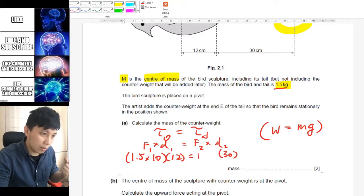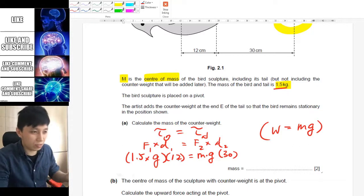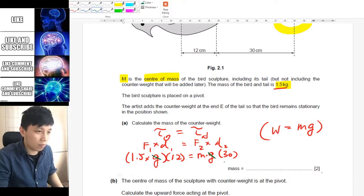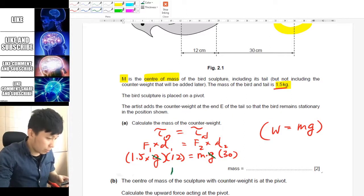Since weight equals mass times gravitational acceleration, you will have 1.5 times 10 (in IGCSE we take g as 10 simply), and then the distance would be 12 cm, so 12. On the other side it's going to be 30 cm, and F2 is going to be M times g also, so I can take this as g. In this case, g would then be cancelled out, so eventually you will have M equal to 0.6 kg.